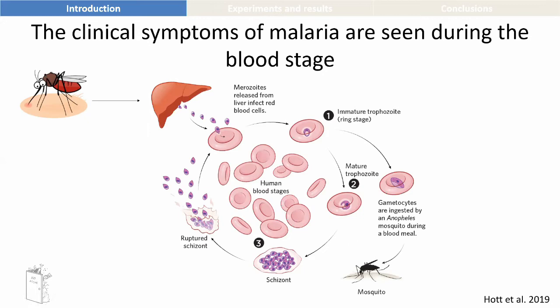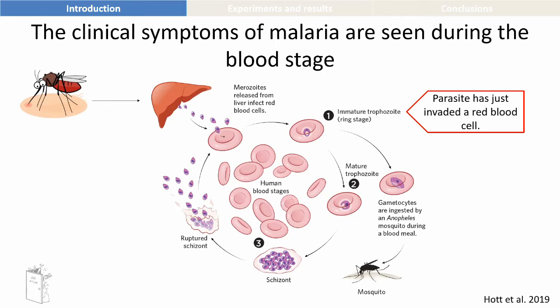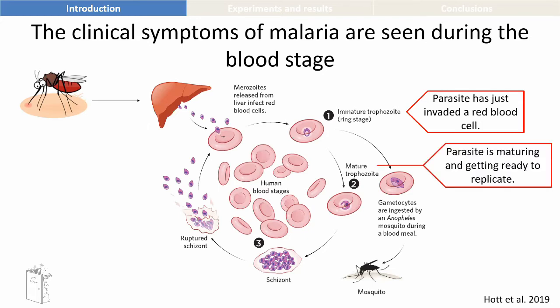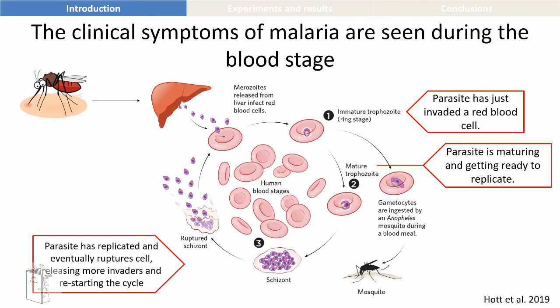When they are released into the human body, they infect liver cells and then they enter the bloodstream as a merozoite. They then turn into an immature trophozoite stage, which is the ring stage. This develops into a mature trophozoite and then further becomes a schizont. The other path the parasite can take is becoming the gametocyte, which is the sexual stage. And this continues to the mosquito and the life cycle goes on. The blood stage parasites burst out from the red blood cells and then go on to infect more and more red blood cells — this is how the clinical symptoms of malaria are seen.